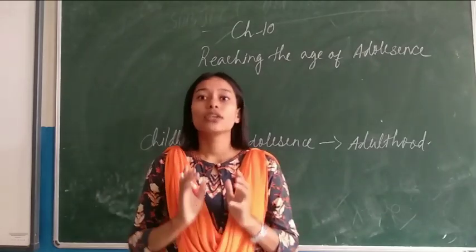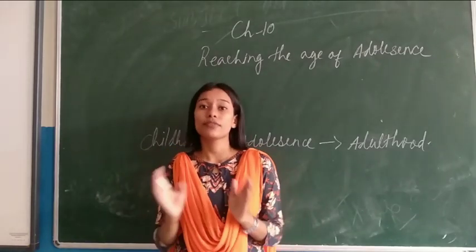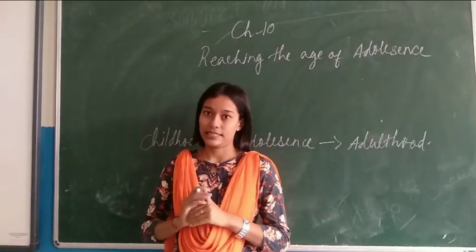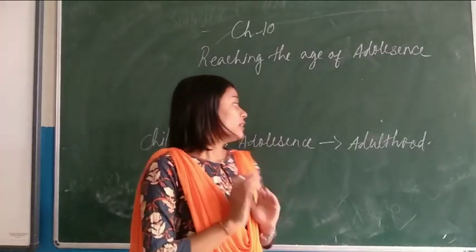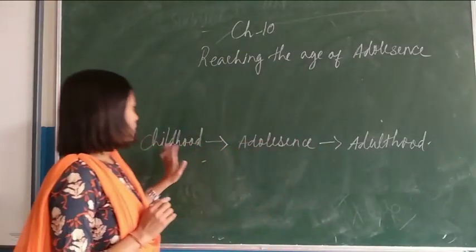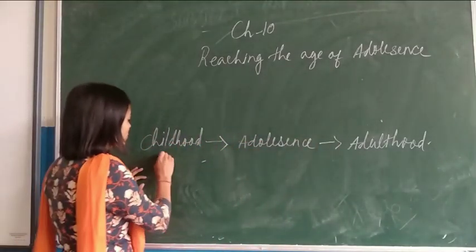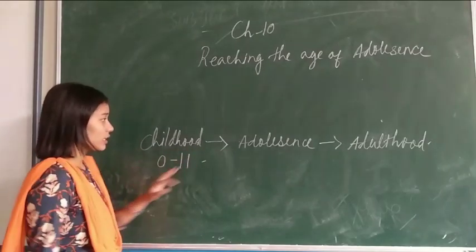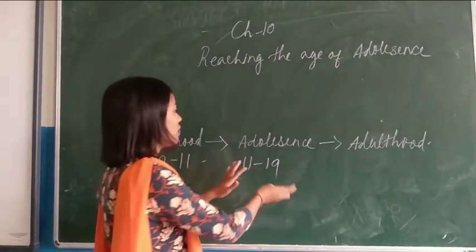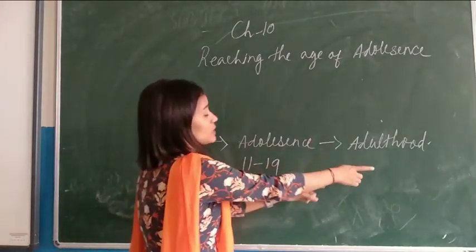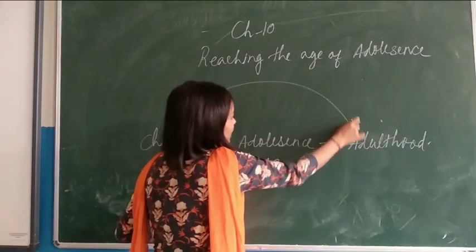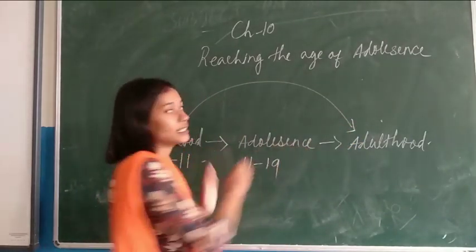A human being is capable of reproduction only after reaching a particular age, and that age is called adolescence. Our childhood starts from 0 to 11 years. Adolescence is from 11 to 19 years. After adolescence comes adulthood. The period between childhood and adulthood is termed as adolescence.